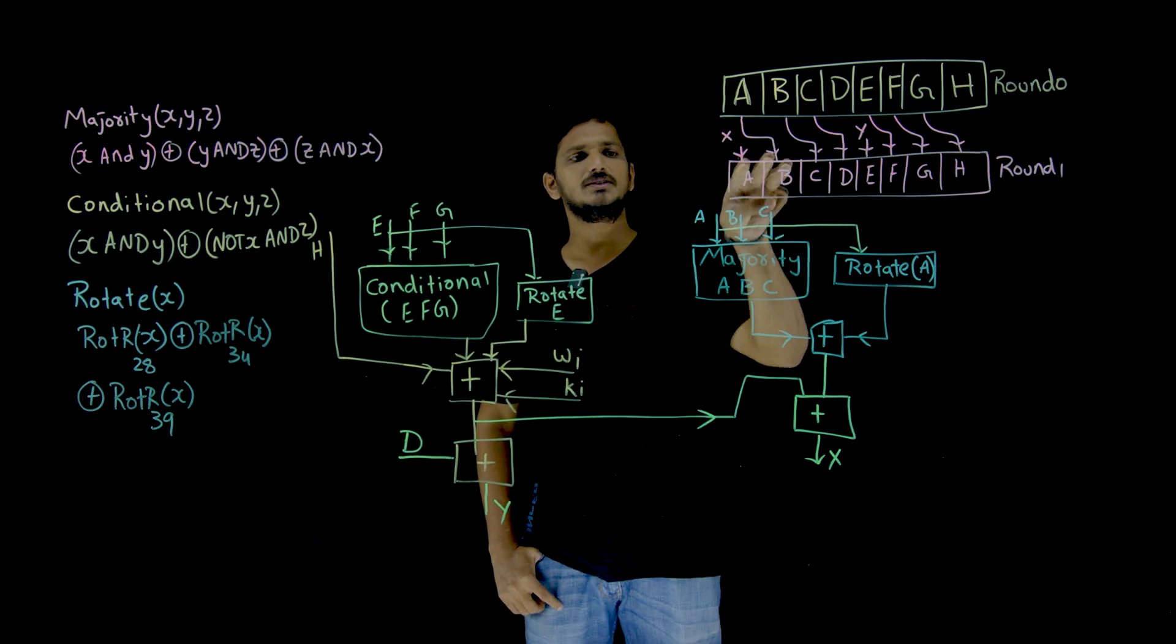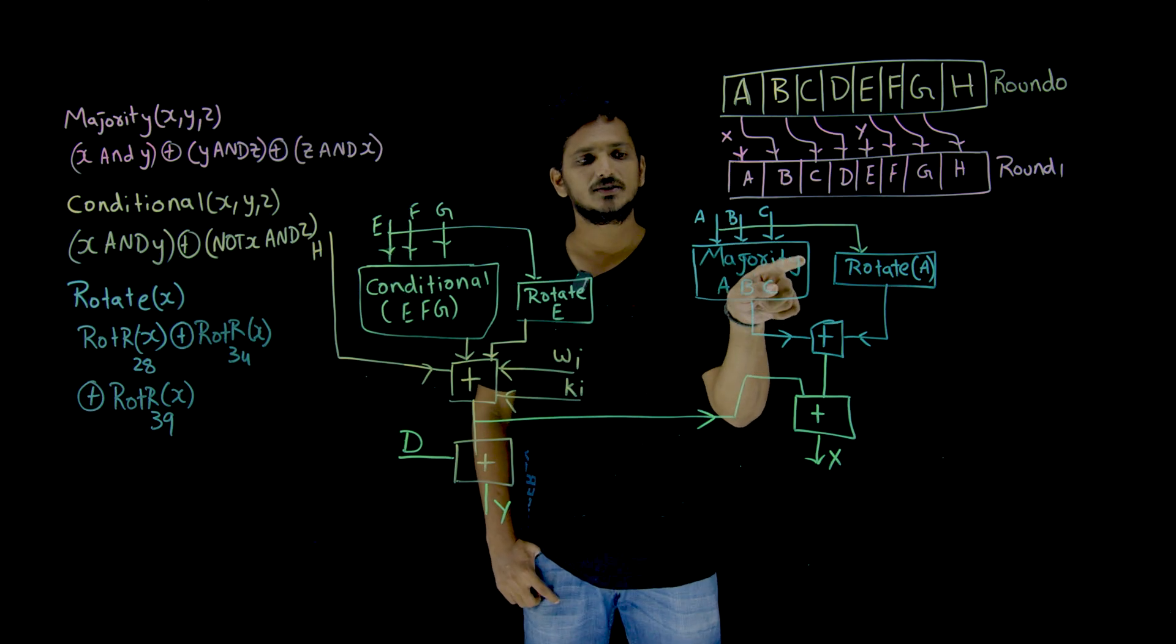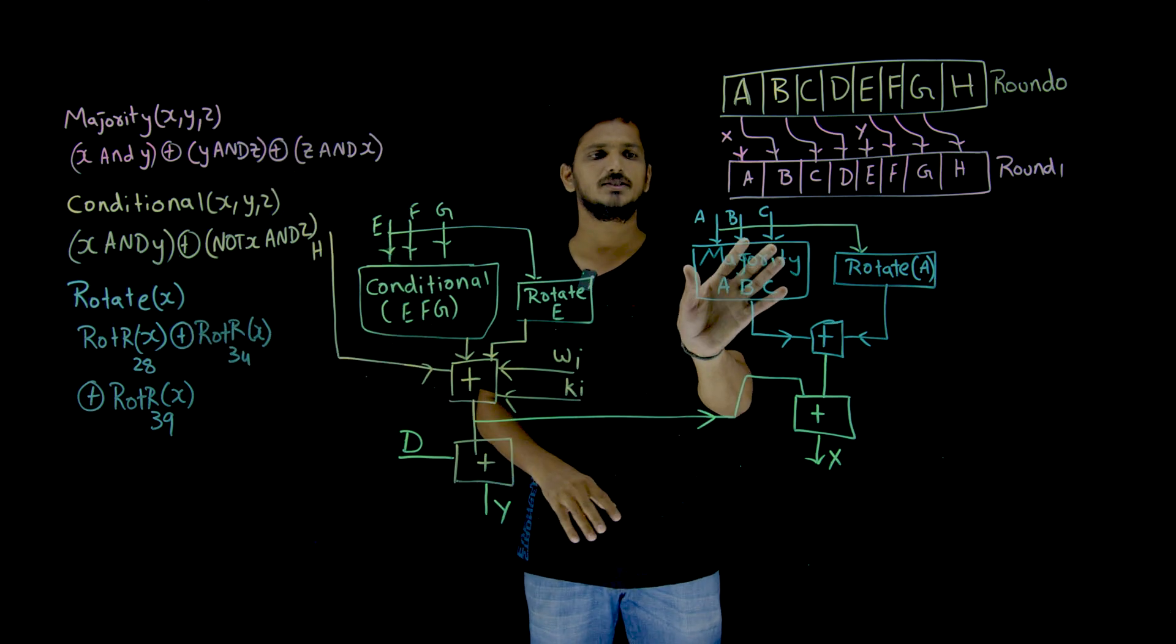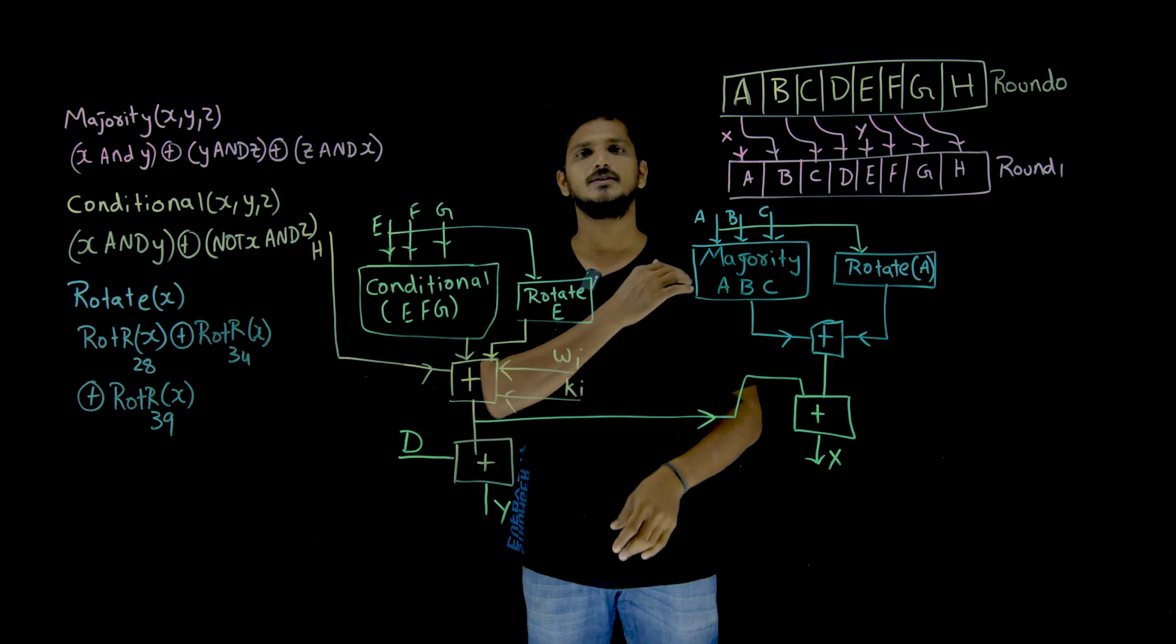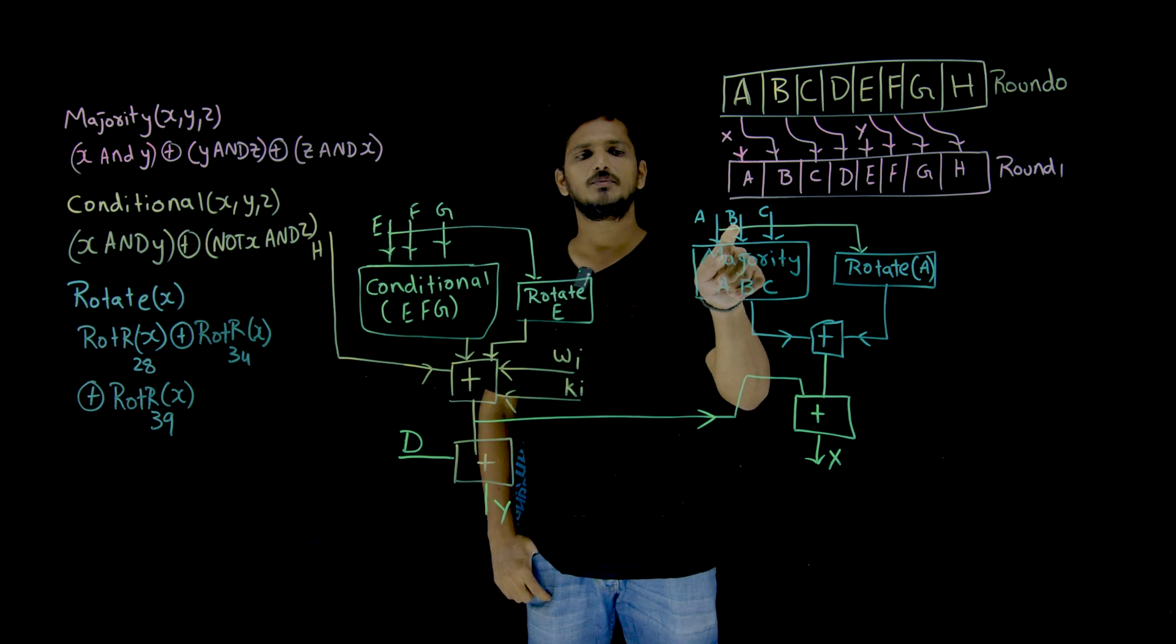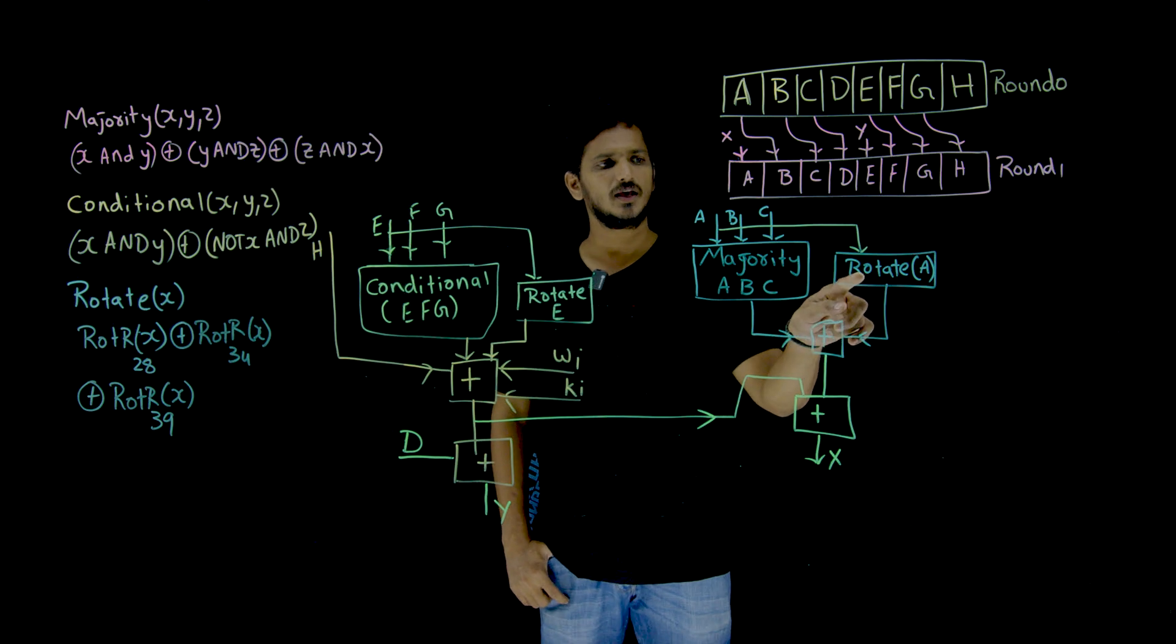Take these ABC values, they are sent into a majority of ABC function. What is this majority function? Let us try to understand. At the end, for now, it is sent into a function called majority function and it is giving you an output. A is 64 bit, B is 64 bit, C is 64 bit. It is going to generate an output of 64 bit.